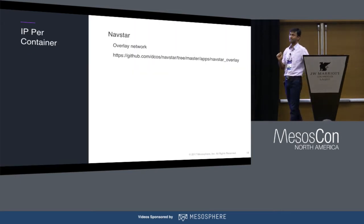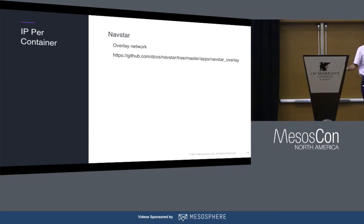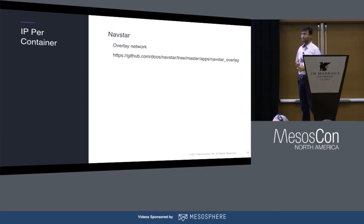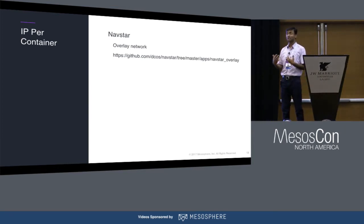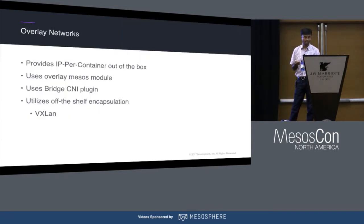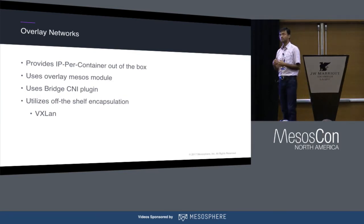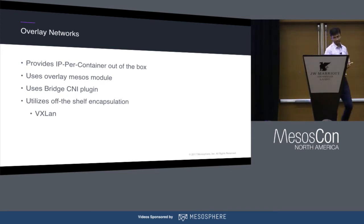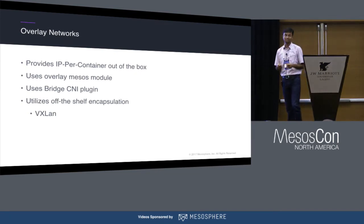One implementation of CNI is IP per container. When we say IP per container, these are routable IP addresses — you can access a container directly through its IP. This is dependent on a Mesos module plus CNI, using the bridge CNI plugin and VXLAN encapsulation, which is built into the Linux kernel. Any overlay in DCOS is configured through config.yaml. The default overlay network comes out of the box, but you can change the subnet or other settings, and you can also add multiple overlays.